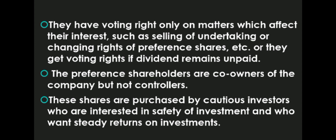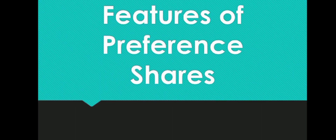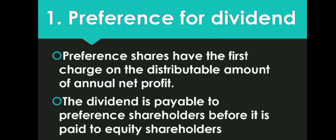The preference shareholders are the co-owners of the company but not the controllers — woh company ko control nahi kar sakti. These shares are purchased by cautious investors who are interested in safety of investment and who want steady returns on their investment. Unlog ko returns bhi milti hain aur unhe preference hoti hai ki returns mile, isliye woh preference shares mein invest karte hain.